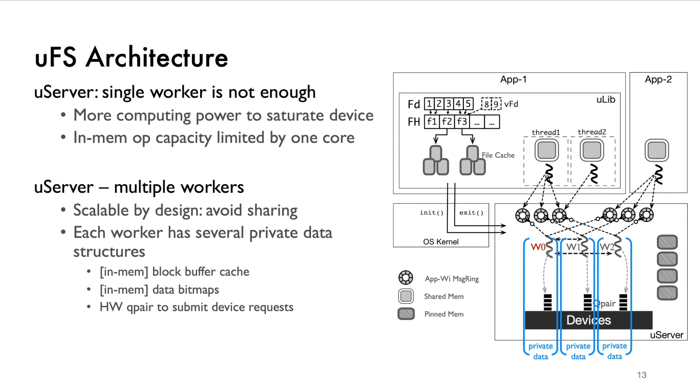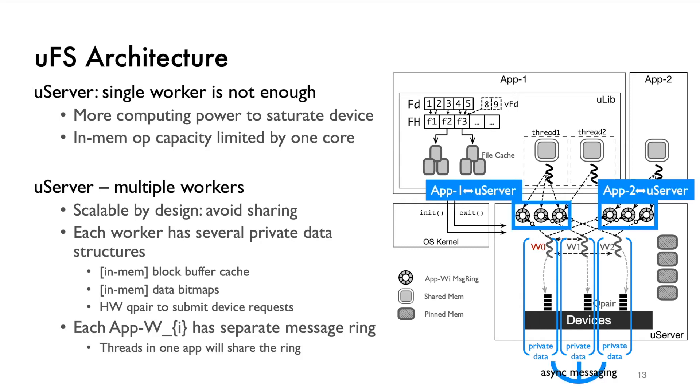When we have multiple workers, USERVER aims for scalable design, specifically avoiding sharing, locking, and blocking. We carefully design the data structures to be private to each worker like the buffer cache bitmap. To avoid synchronization overhead at the server side, multiple workers will not share a message ring connecting to one application. The communication between workers is also done by message passing.